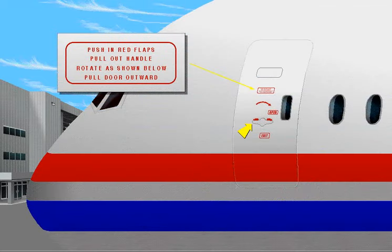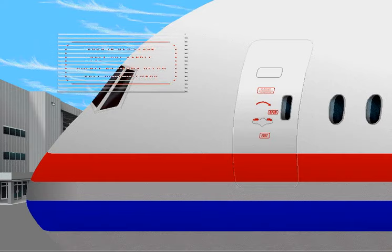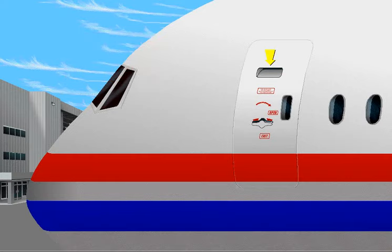Let's take a closer look at door one left. When operating the door from outside, pulling the exterior operating handle outward and rotating it unlatches the door. As the operating...